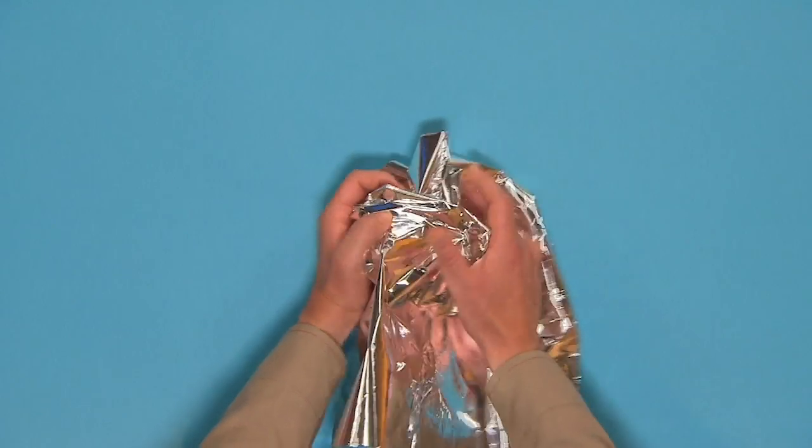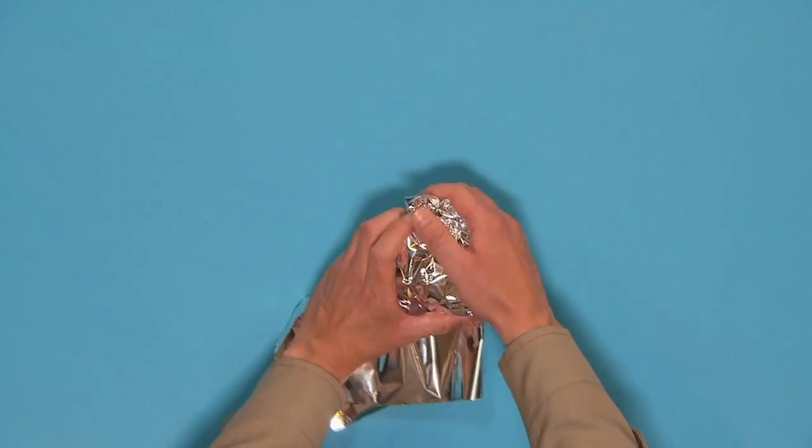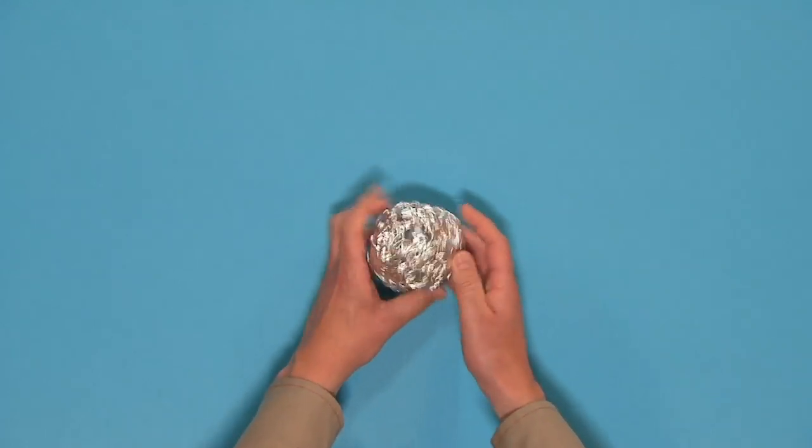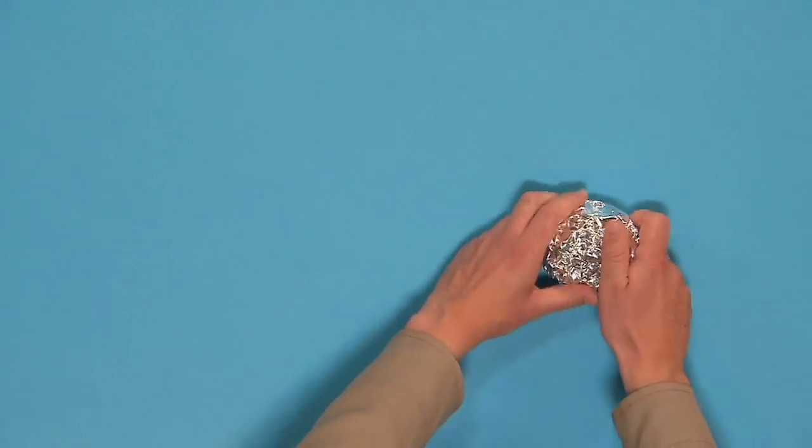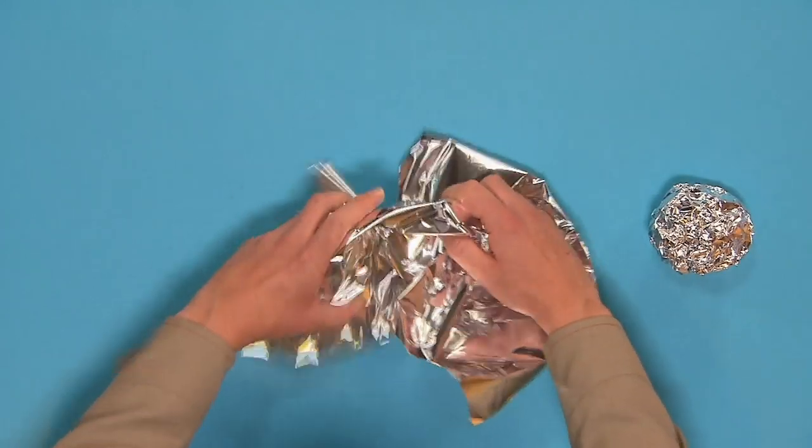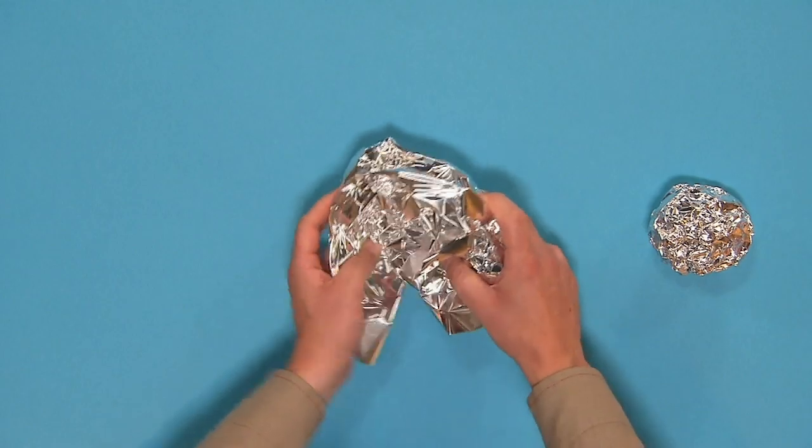First, make a ball shape from some kitchen foil for the chameleon's head. Then, shape some foil into an arch for the body.